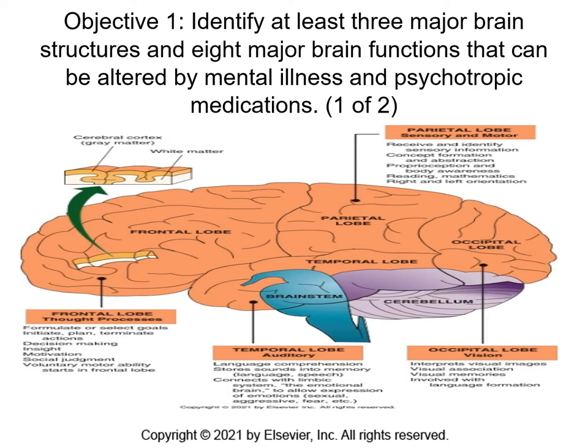There are eight major brain functions. The brain monitors changes in the external world and monitors the composition of body fluids. It helps regulate contractions of skeletal muscles, regulate organs, and initiate basic drives such as hunger, thirst, sex, aggression, and self-protection. It helps maintain conscious sensation, store and retrieve memories, regulate moods and emotions, regulate sleep, language, and process certain auditory functions.